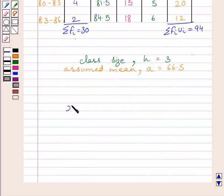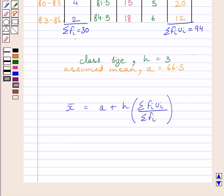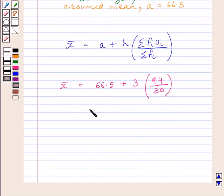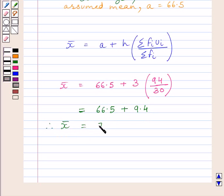From the key formula, mean equals assumed mean A plus H multiplied by summation FiUi upon summation Fi. Substituting the values: mean equals 66.5 plus 3 multiplied by 94 upon 30. Multiplying these two terms gives 9.4, so mean equals 66.5 plus 9.4, which gives mean equal to 75.9.